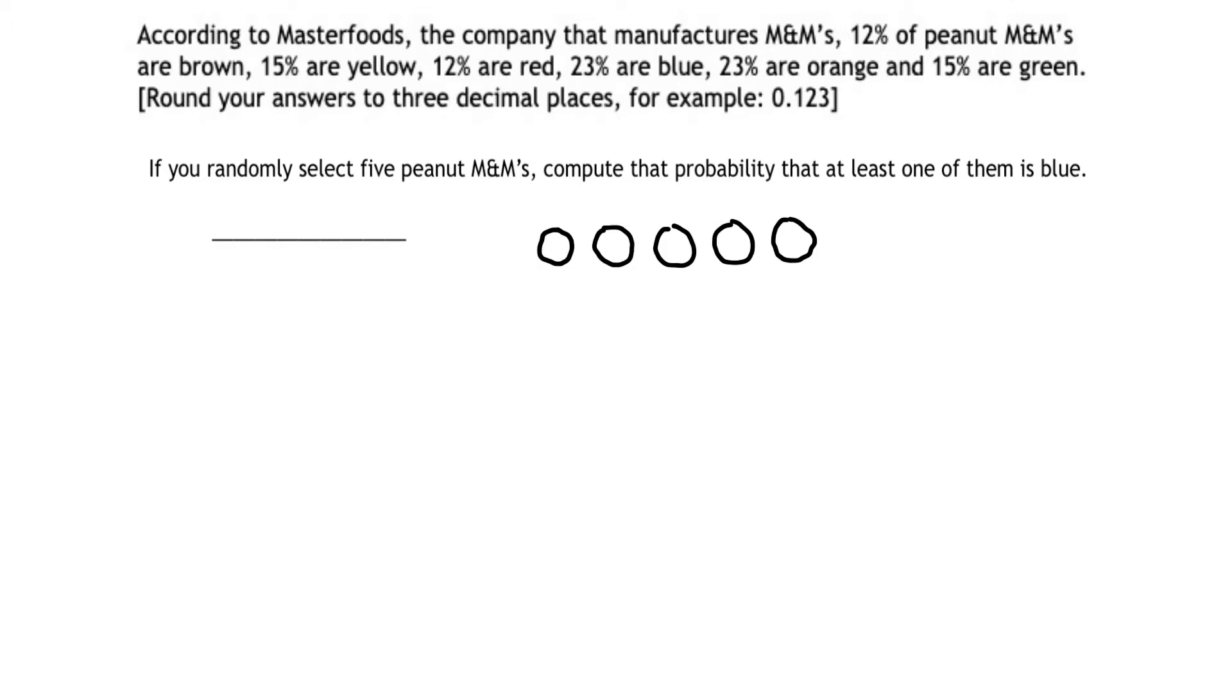Now this is a lot more complicated than anything we've done thus far, because the probability that at least one is blue, well that means the first one could be blue, or the third one and the first one could be blue.